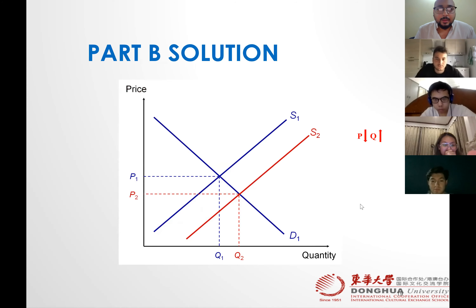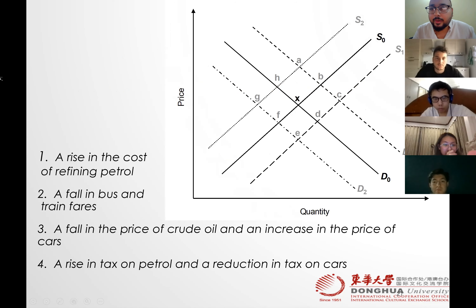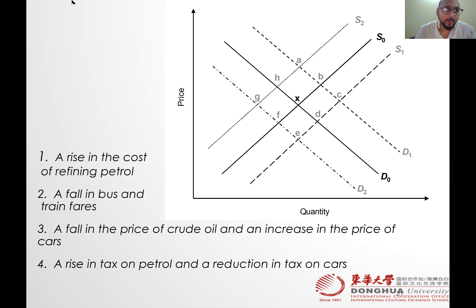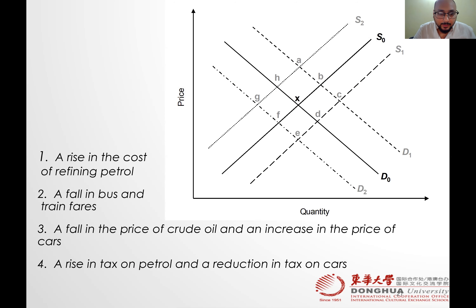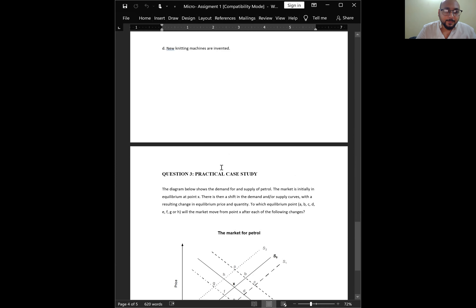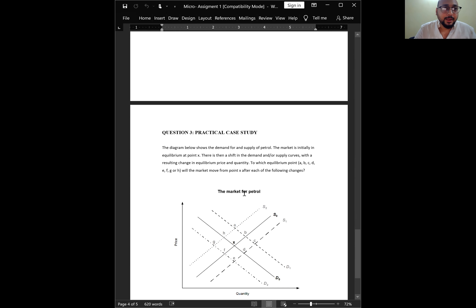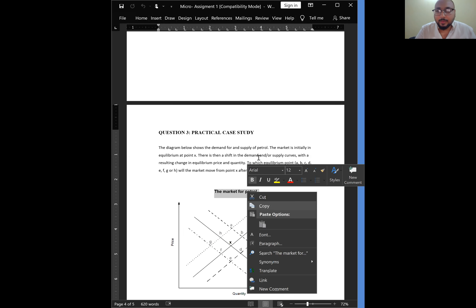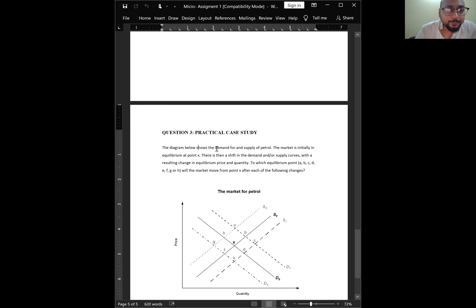Now let's move on to the assignment question. I'm going to drag the controls to the left side. The question — which is question four — involves a lot of discussion, so I've included it here. The question reads: this is the market for petrol. The diagram below shows the demand and supply of petrol; the market is initially in equilibrium at point X.